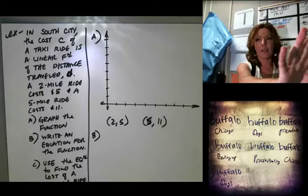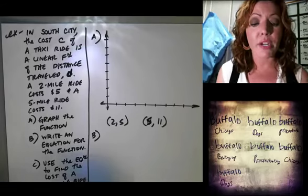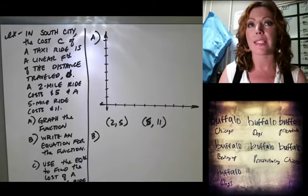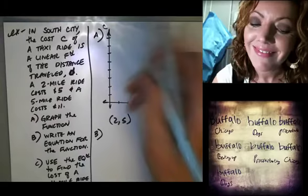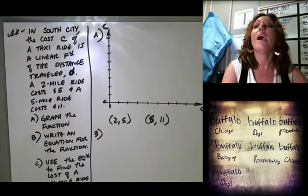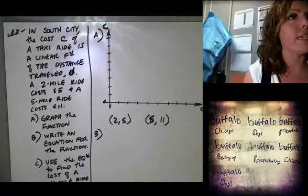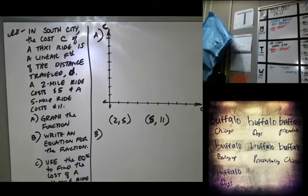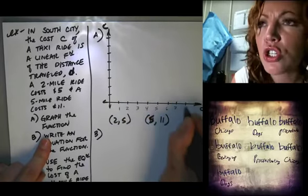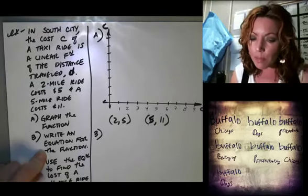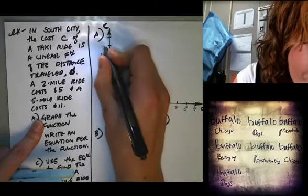In South City, the cost c of a taxi ride — we have two variables: cost and distance traveled. Distance goes on the x-axis. For the d-axis, let's go by ones: 1, 2, 3, 4. For the c-axis, let's go by twos: 2, 4, 6, 8, 10 — and more since taxis are expensive.